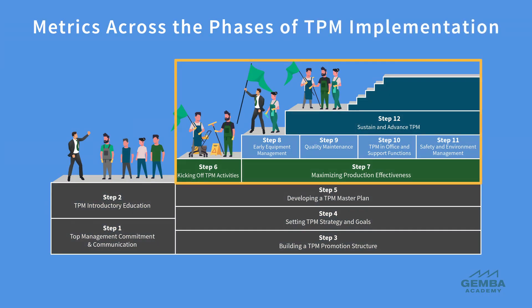It's important to be familiar with TPM metrics, as we will use them across all phases of the TPM transformation journey. In the middle and later phases, regular review of the TPM metrics helps us to know if our improvement actions are delivering sustainable results. This allows us to adjust course when needed, as we pursue zero breakdowns, zero accidents, and zero defects.